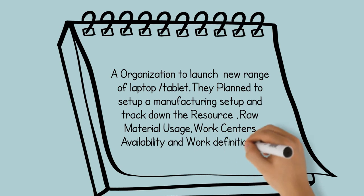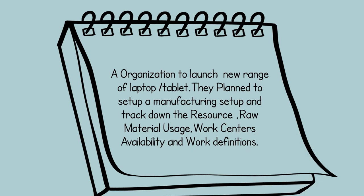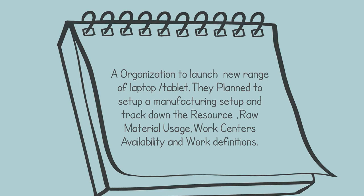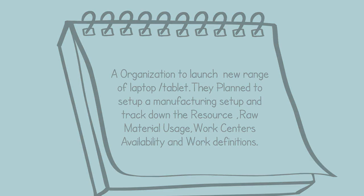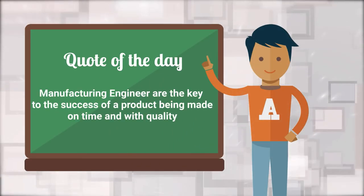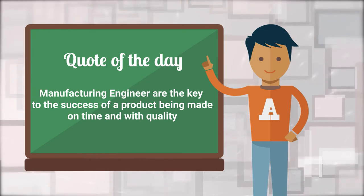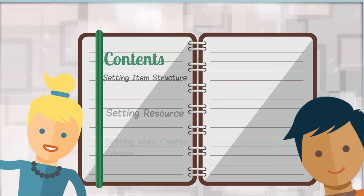This was the turning point where they decided to bring in this range of products, and they were successful in having their first customer order. As time passed and the market grew, the quantity of orders started growing, and they needed a system that could easily handle such unforeseen demand and plan their complete manufacturing process. Besides handling the fluctuation in demand, they also want to monitor the resource availability with the defined work definition.